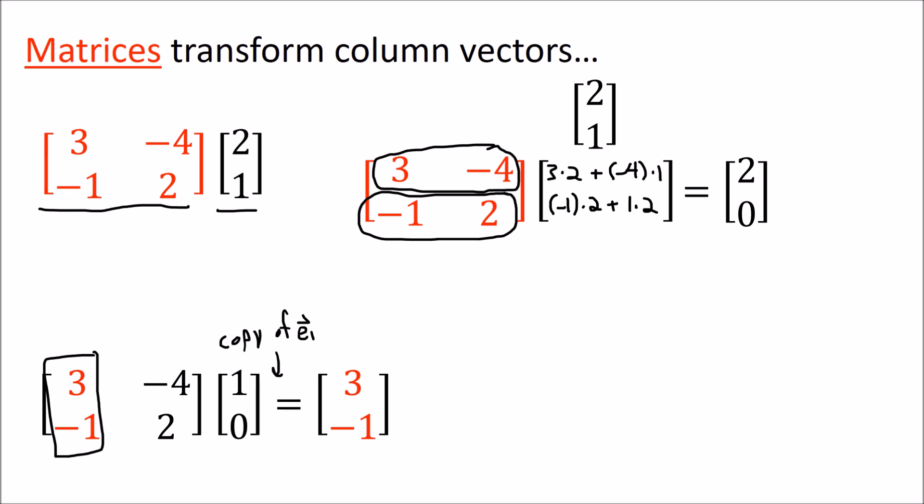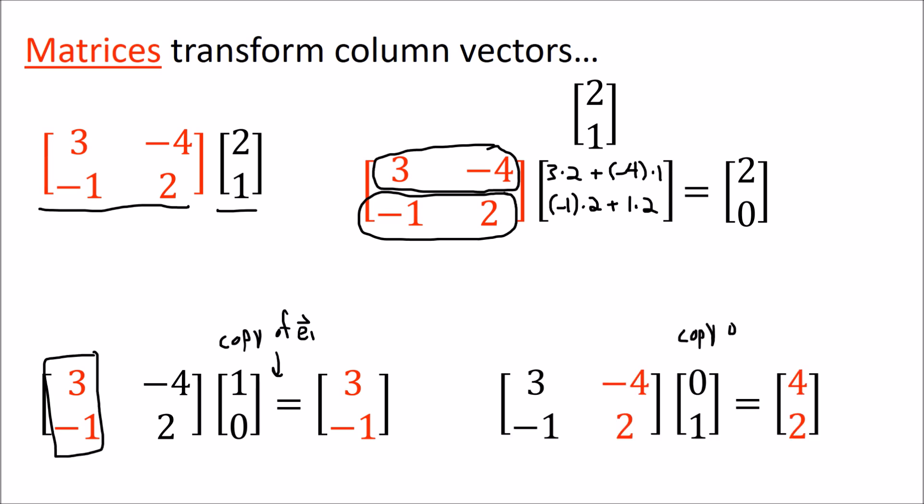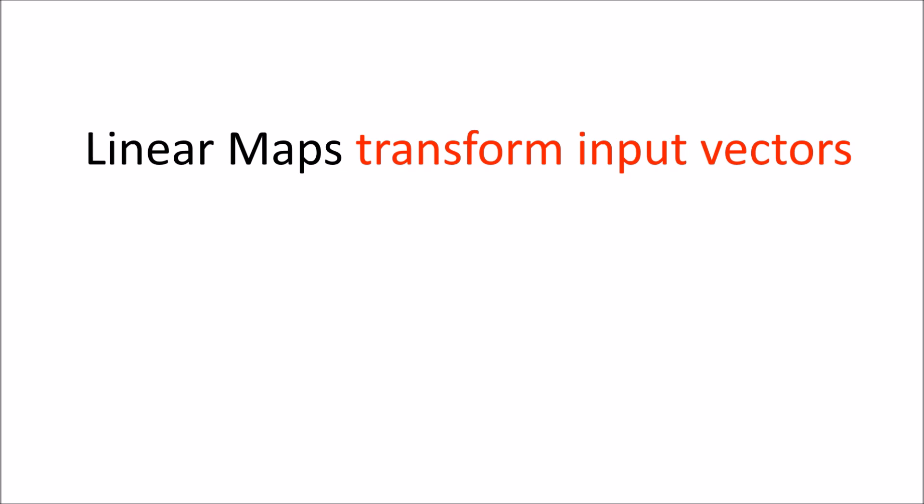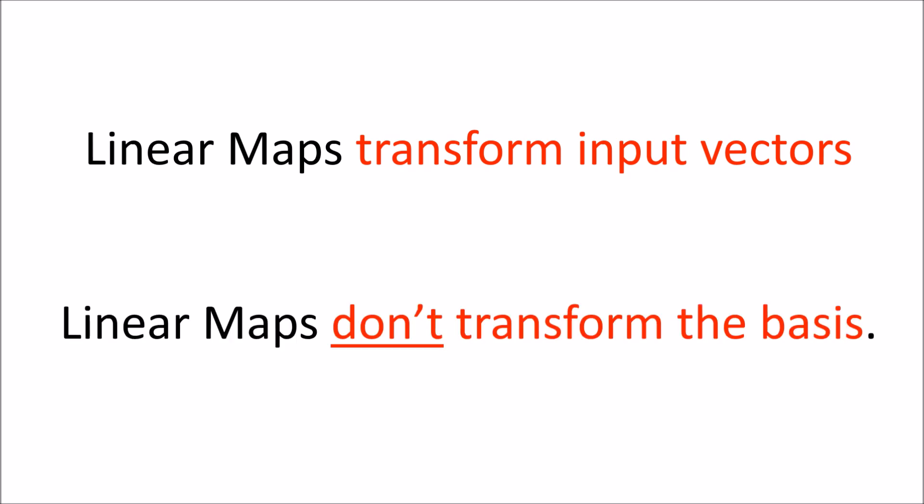If I use the column vector 1-0 as input, I get the first column of the matrix as output. If I input the column vector 0-1, I get the second matrix column as output. These column vectors are like copies of the basis vectors E1 and E2. Importantly, linear maps transform vectors but do not transform the basis — the basis isn't changing. The i-th column of a matrix tells you where to map a copy of the i-th basis vector.